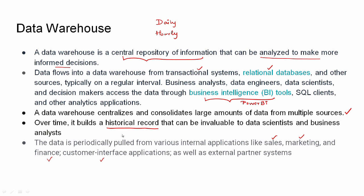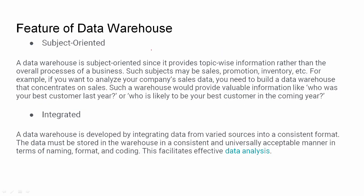Now let's look at the features of a data warehouse. There are 4 features. The first feature is subject-oriented. Subjects include sales, marketing, inventory, and customer interface — these are department-oriented topics. Many companies have sales data, marketing data, and many data departments. That is subject-oriented.